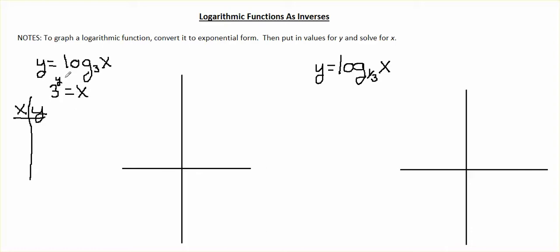So we're going to do this backwards — we're putting in values for our y variable. We should probably put in three different values to see what happens. They're going to be the same values we used when graphing exponential functions: negative 1, 0, and 1.